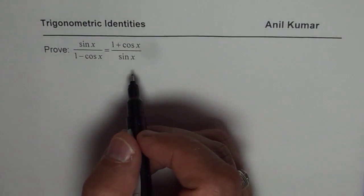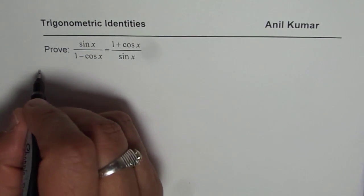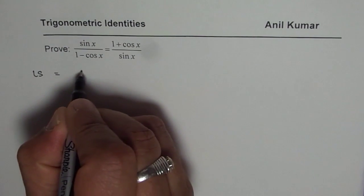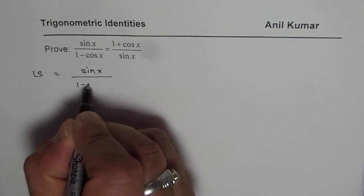So that is what you need to prove. In such cases, what should we do? We have to start from one side. Let us start from the left side. Left side is equals to sin x divided by 1 minus cos x.